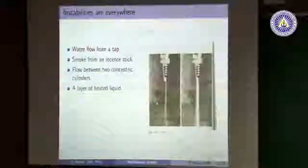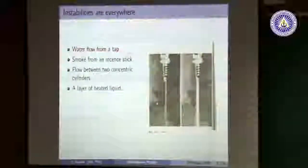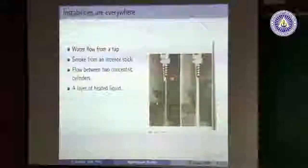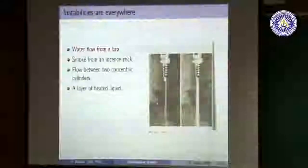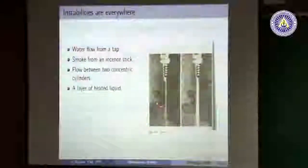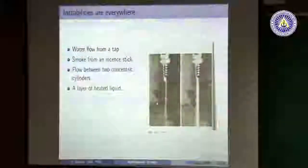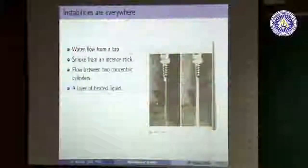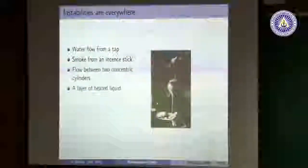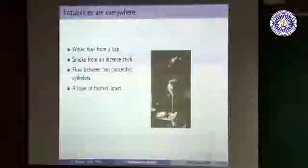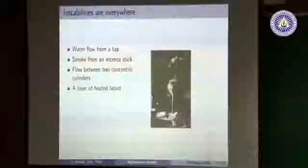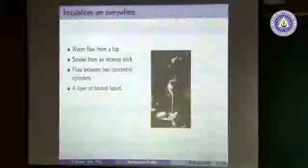Let us introduce and motivate this class of problems. When you open a tap a little bit, the water stream comes out very gently, but if you open it more, you see very complicated flow from the same system. Clearly, depending on a parameter like flow rate, you see very different flow behavior in this simple domestic setting. Another example is smoke from a cigarette or incense stick. Here the smoke particles act as flow markers — initially hot fluid rises in a very nice manner, then it becomes more complicated and chaotic. This is an example of an instability.